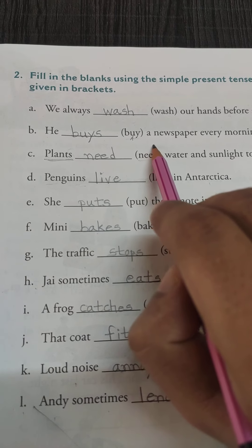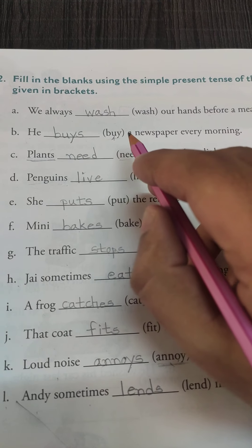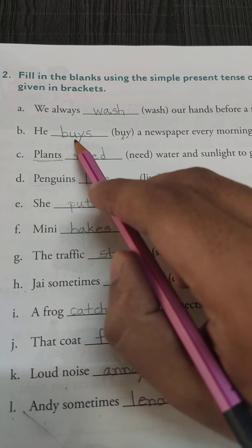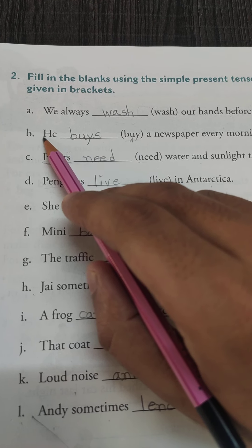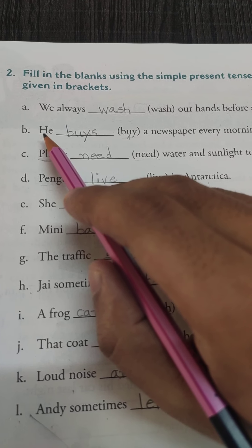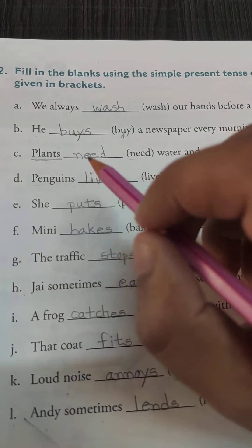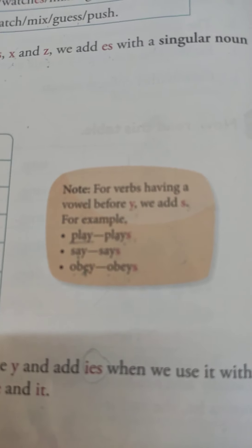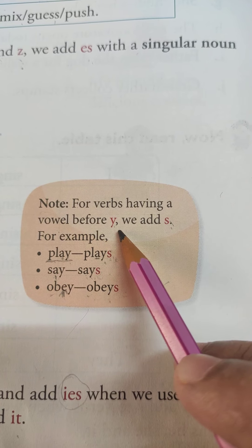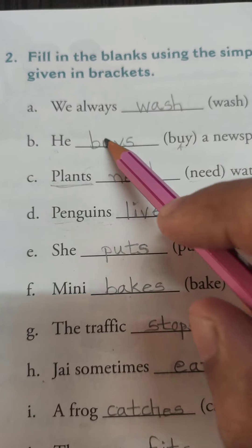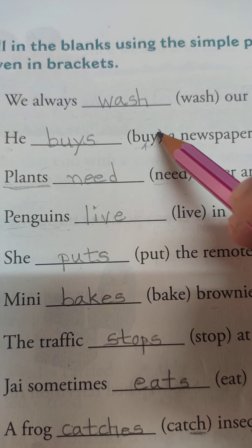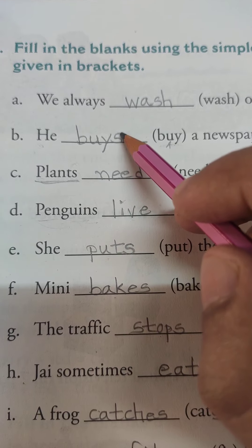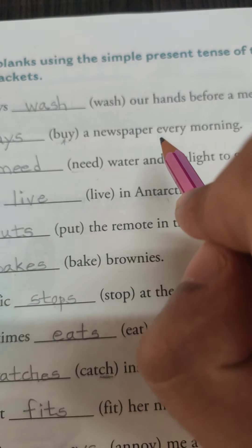He buys a newspaper every morning. 'Buy' — b, u, y — has a vowel 'u' before y, so we add 's': he buys. He is a singular pronoun, and since the vowel comes before y, we add only 's', giving us 'buys'. He buys a newspaper every morning.